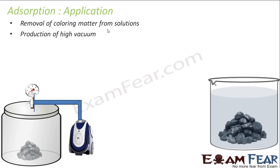The second application is the production of high vacuum. If you want to create a really high vacuum, you can use a vacuum pump — the pump removes some air and it becomes a vacuum. But if you want to create an ultra-high vacuum, you can add charcoal as well. The charcoal will remove the remaining traces of air.